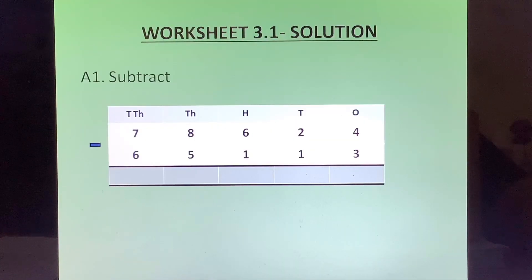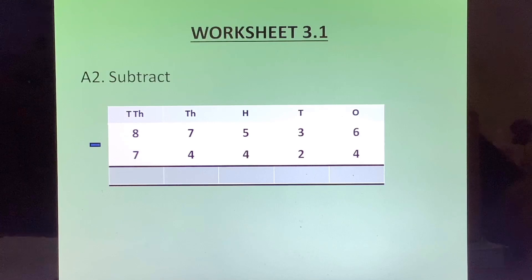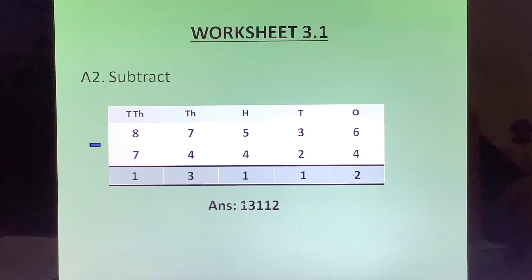Answer 1: We start from the right side, 1's column. 4 minus 3, 1. 2 minus 1, 1. 6 minus 1, 5. 8 minus 5, 3. 7 minus 6, 1. So our answer is 13511. Answer 2: We start from the 1's column. 6 minus 4, 2. Then 3 minus 2, 1. 5 minus 4, 1. 7 minus 4, 3. 8 minus 7, 1. Our answer is 13112.